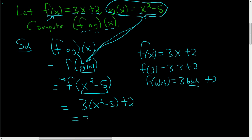To finish, you distribute the 3: so 3x squared minus 15 — 3 times 5 is 15 — plus 2. So we end up with the final answer of 3x squared minus 13.